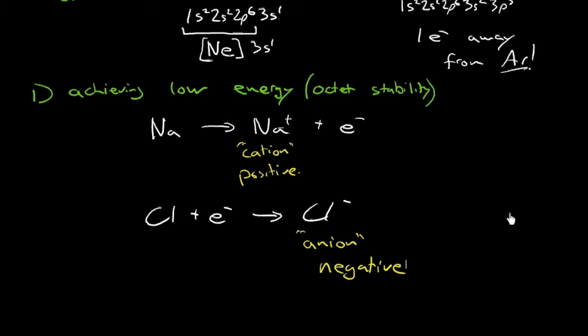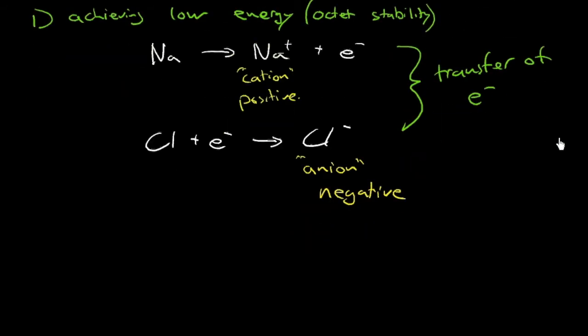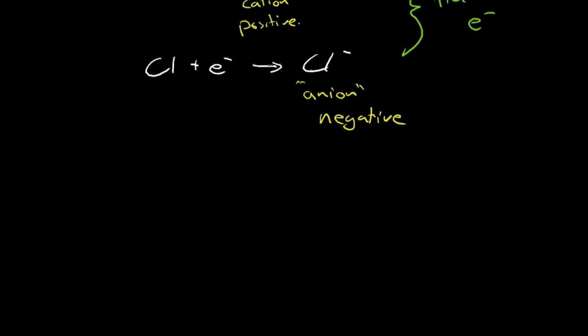So that's the first step, achieving low energy by obtaining octet stability through, what was this? This was the transfer of an electron. Different from covalent bonding involving the sharing. This is a transfer of an electron. That's really the way I view it, the first logical step.